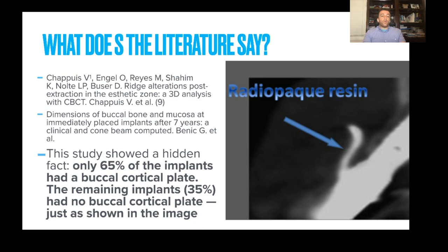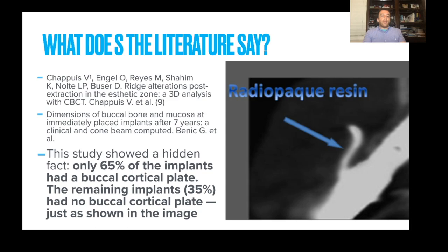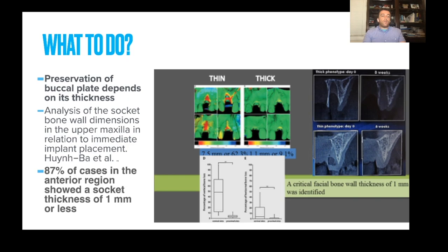What does the literature say? From the works of Chapuis and Bennett, the thin buccal plate in most cases is less than one millimeter in thickness. A study by Benick used radiopaque resin and CBCT to show how thin the buccal plates were. It showed that 65% of implants had a buccal cortical plate, while the remaining 35% had no buccal cortical plate at all. Preservation of the buccal plate depends on its thickness — analysis showed that 87% of cases had a socket thickness of one millimeter or less. This is a big problem, especially in the aesthetic zone — and this is where the socket shield technique comes into play.